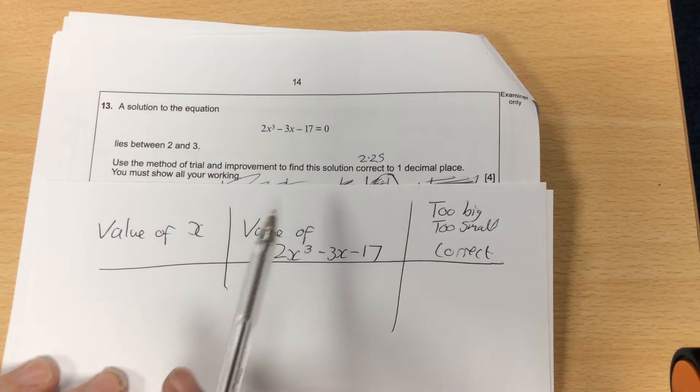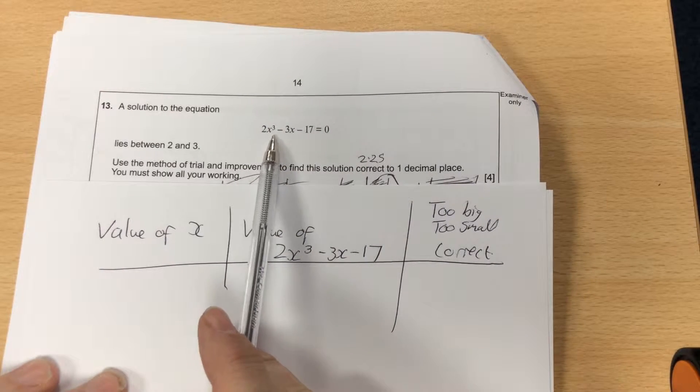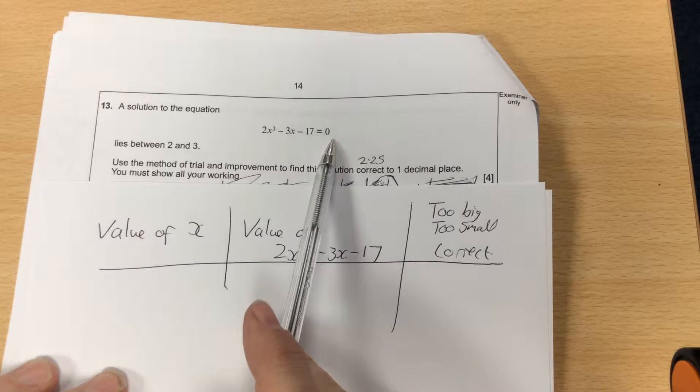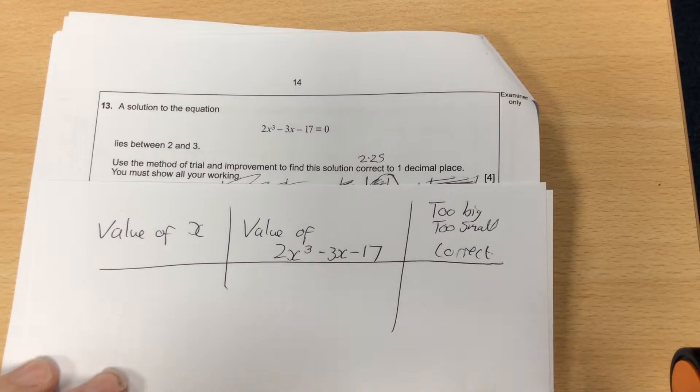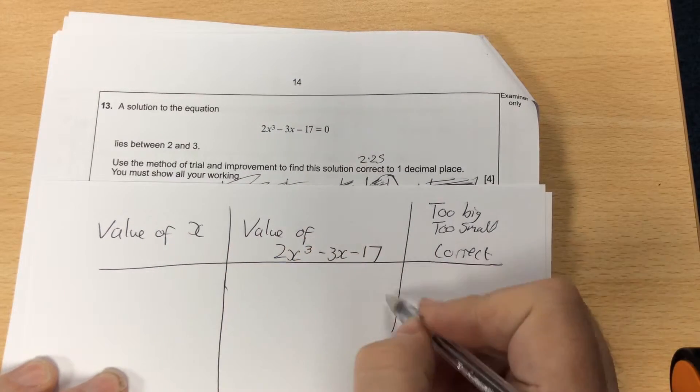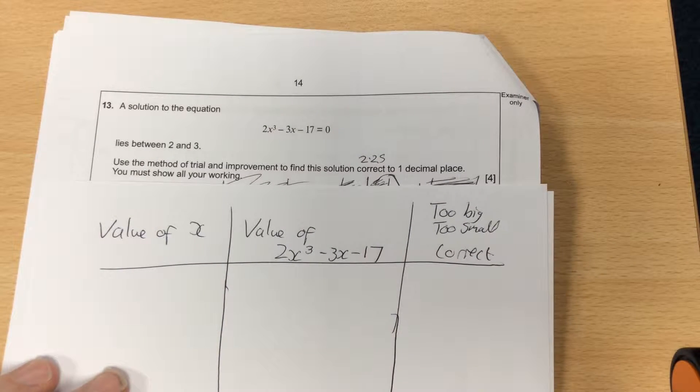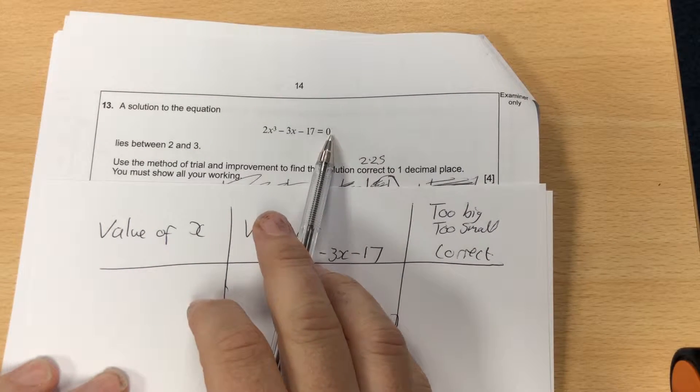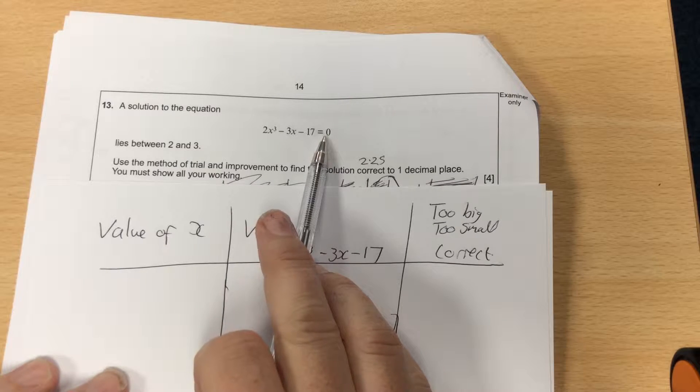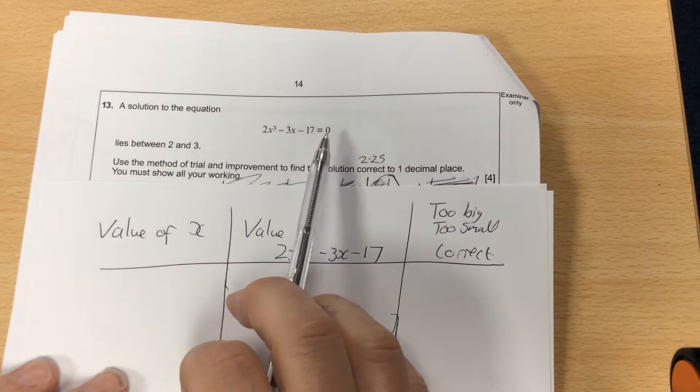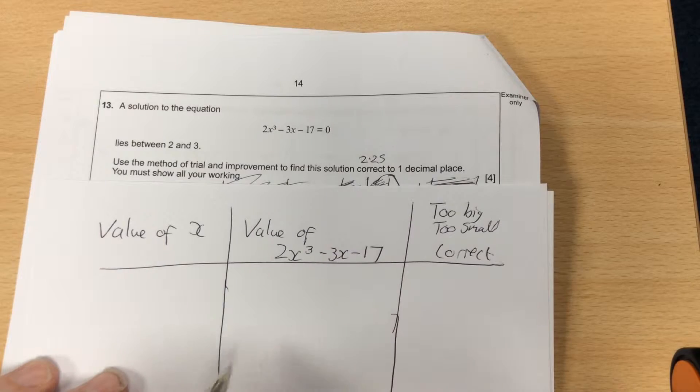Right, trial improvement. When we're finding a solution to the equation 2x³ - 3x - 17 = 0, which lies between 2 and 3, we need to substitute values between 2 and 3 into this. If it comes up as a minus, it means it's below 0 and it's too small. If it comes up as a plus, it's too big and it's high.